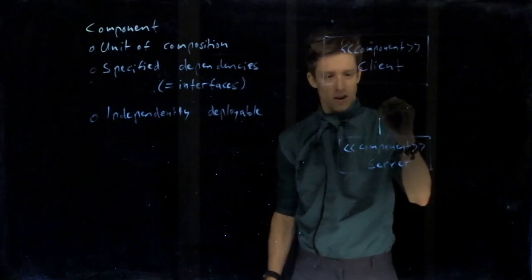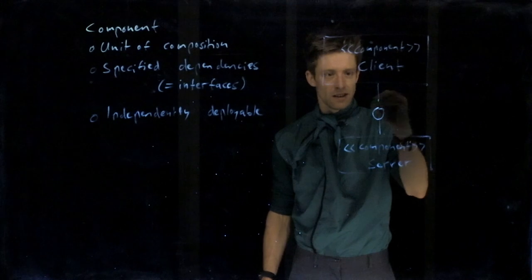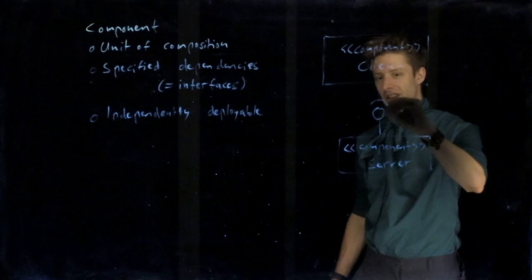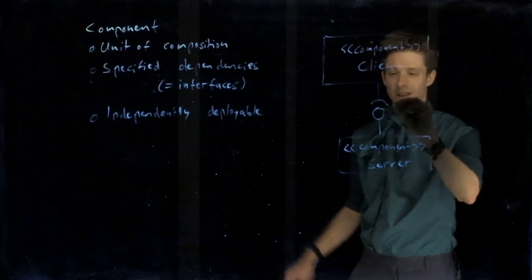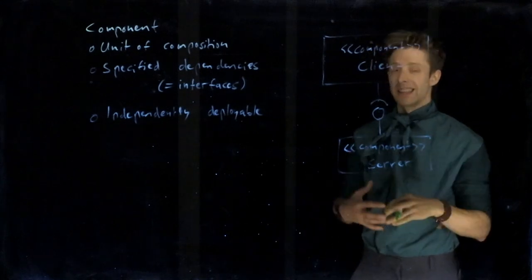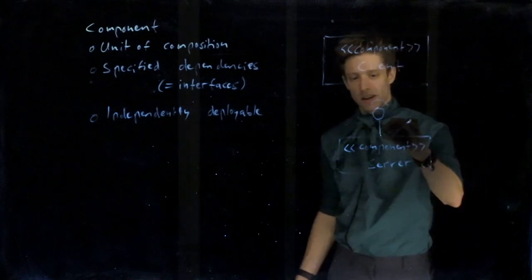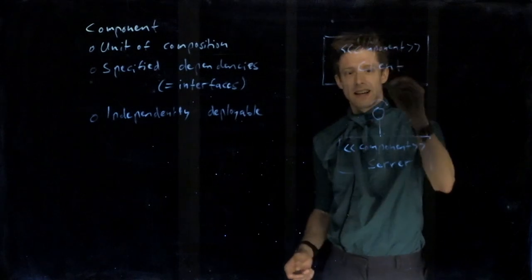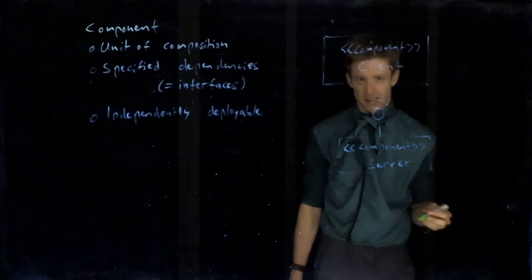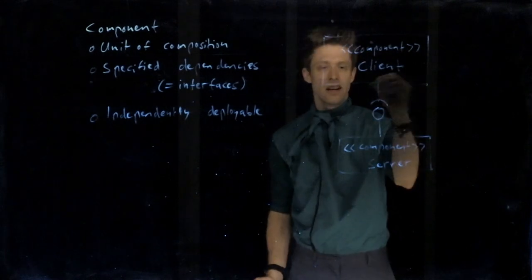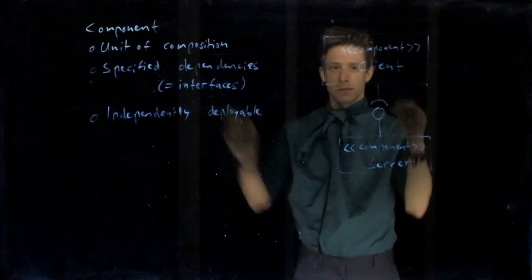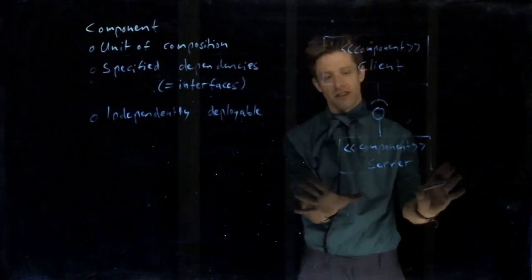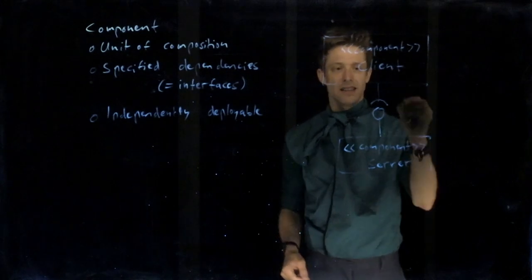And here we use often what is called the lollipop notation. What we have here is the filled thing. That's why it's called lollipop. The server is providing something. It's offering something. So this is a way of saying the server has some kind of functionality that someone else can use and the client is requiring this functionality. It depends on it. So this is the dependency that we are specifying. Saying the client cannot run reasonably without the server. The server does not have any dependencies. So it's fine.